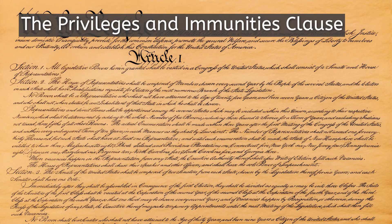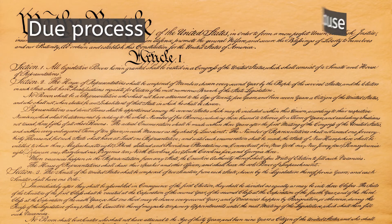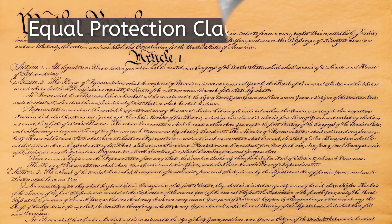Then you have the Privileges and Immunities Clause — Americans are given certain privileges, and these are given by the government. Next, you have due process: civil rights are protected by the process of law; they are not given, but are protected. Finally, you have the Equal Protection Clause. This process is guaranteed to all people born or naturalized in America.